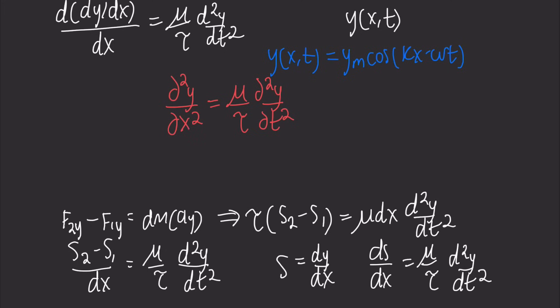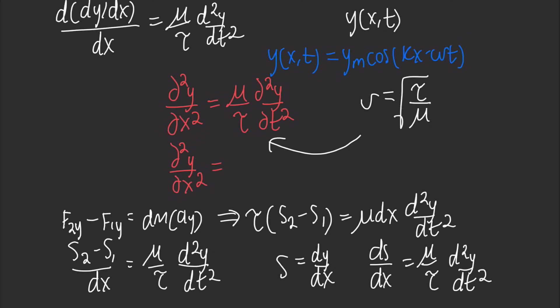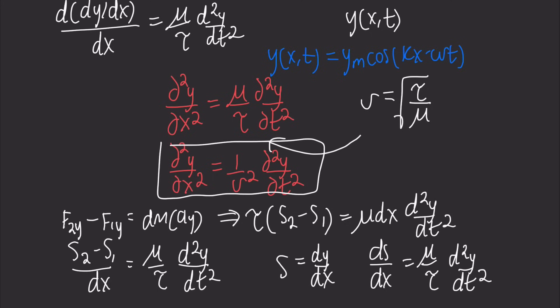We also know that the speed of a wave on a string is v equals the square root of tension τ over linear density μ. Substituting that back, we arrive at the final wave equation: ∂²y/∂x² equals (1/v²)·∂²y/∂t². That is our final wave equation, applicable to any wave. Thank you for deriving this equation — I hope you learned something new, and I'll see you in the next video.